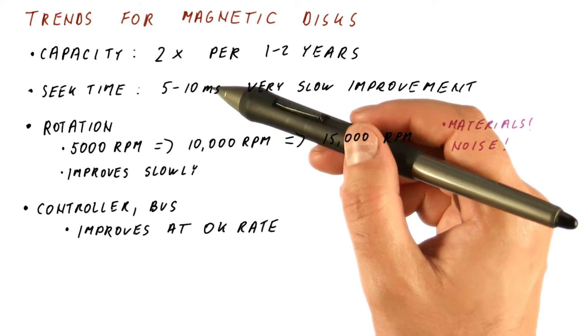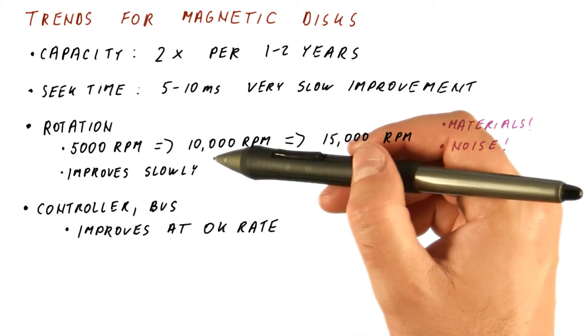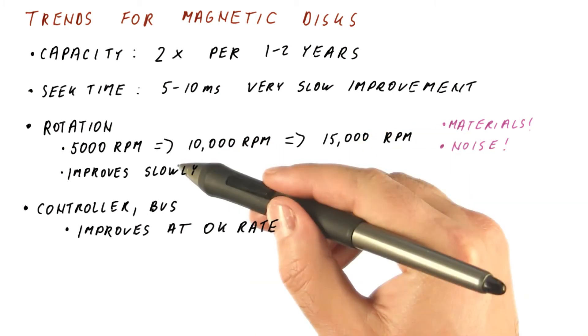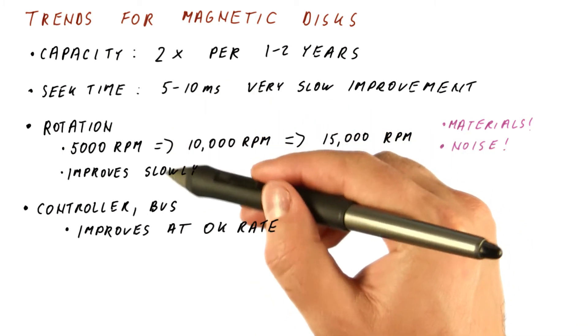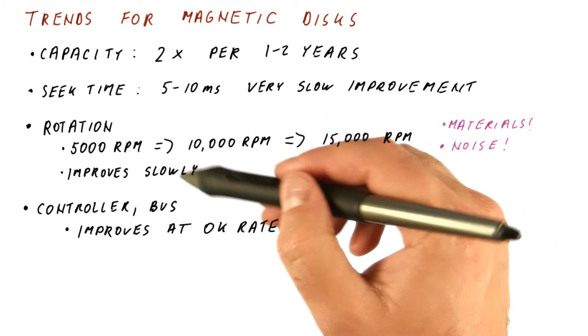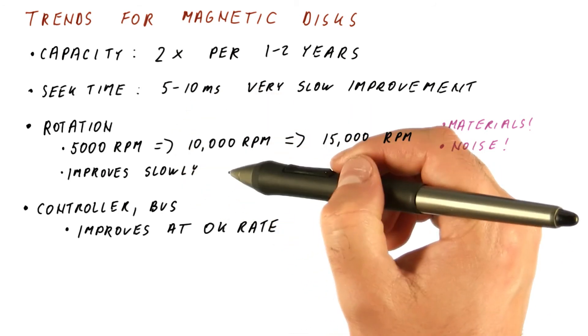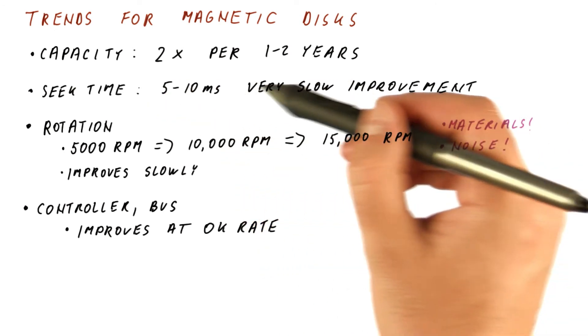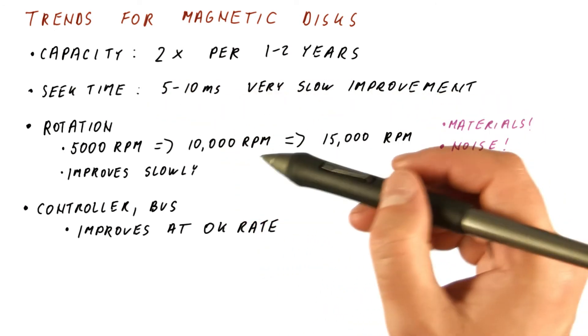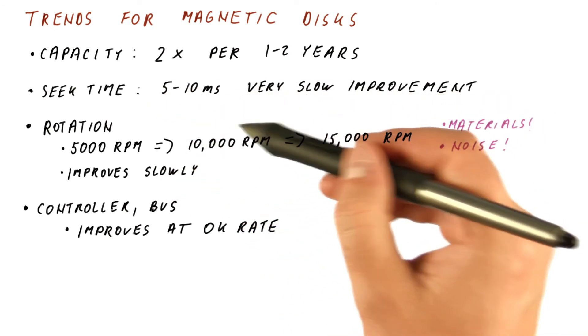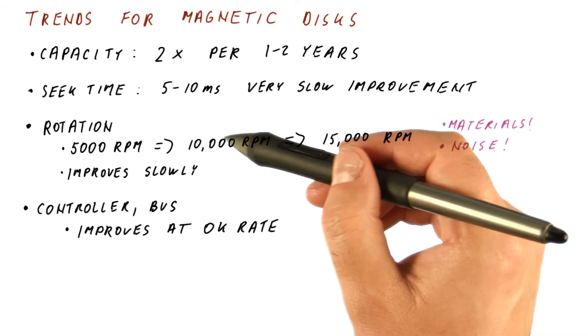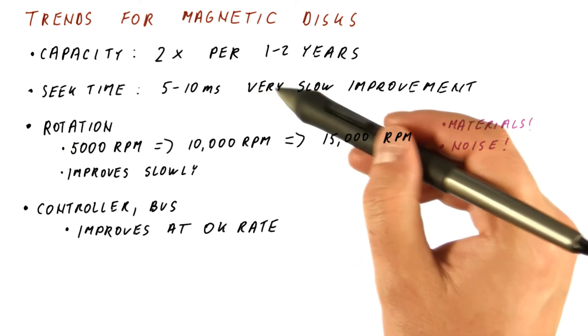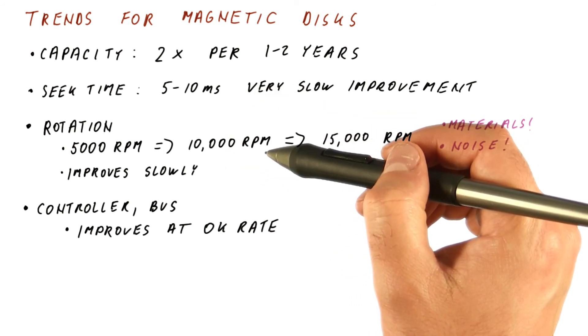So the disk access time is pretty much dominated by the seek time, and to a lesser extent now, the rotational latency. And now you can see why disks have been lagging in improving their latency relative to memory and processors. This is because seek time requires better mechanics, and rotational latency also requires better materials and better mechanical properties, both of which are not really subject to something like Moore's law that we get for processors.